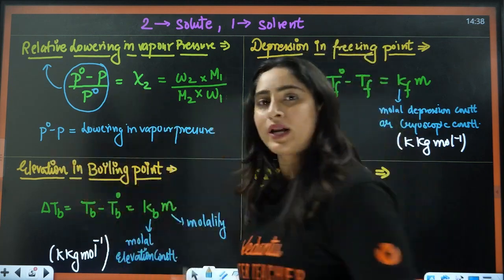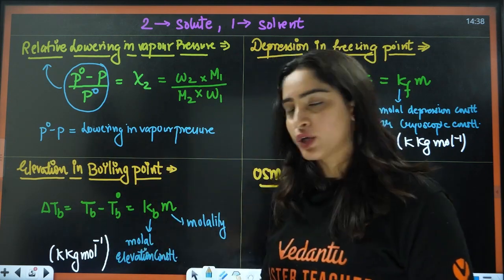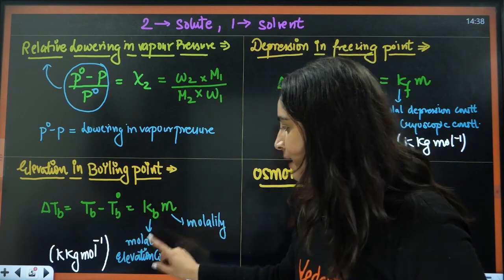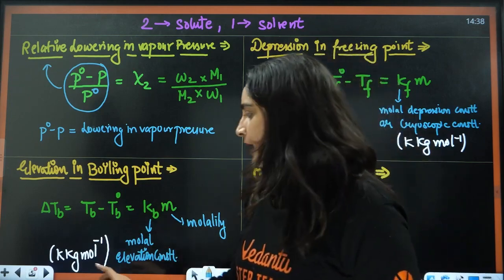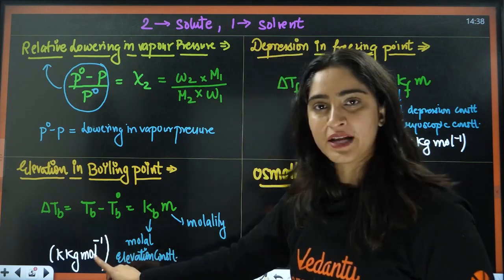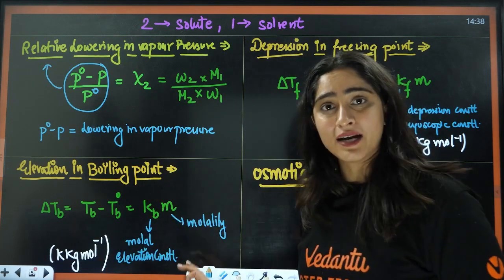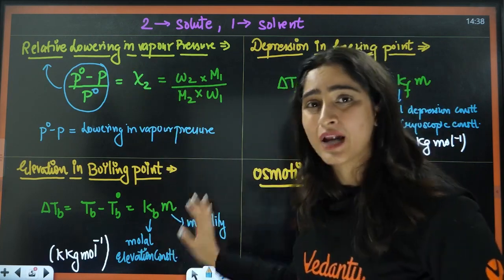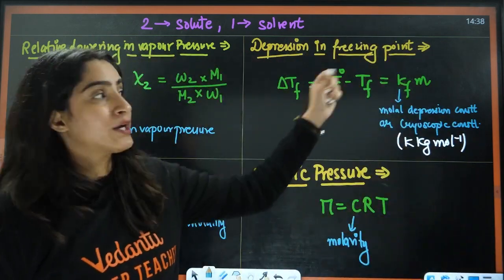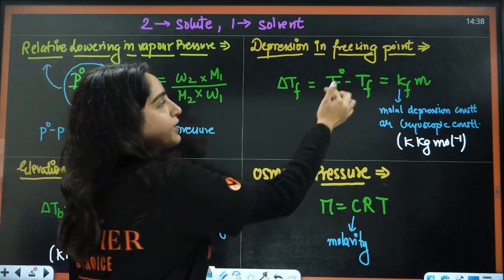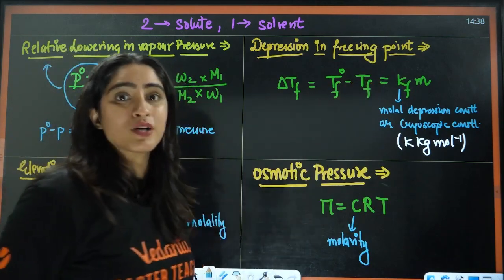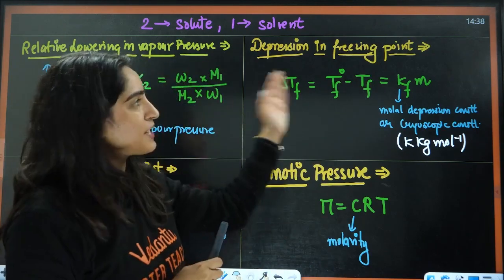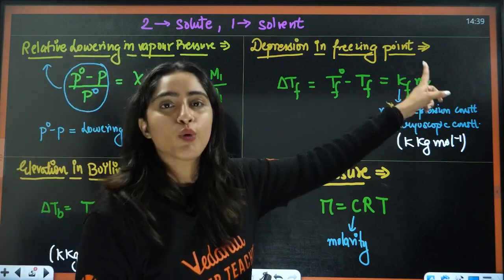Next, we have elevation in boiling point — the boiling point increases after adding solute. So delta T_b equals T_b minus T_b⁰, which equals K_b times m, where K_b is the molar elevation constant. The units for K_b are also mentioned and can be asked. Here m is the molality. Always remember: with relative lowering in vapor pressure, we use mole fraction; here we use molality. In depression of freezing point, the formula is similar — T_f⁰ minus T_f because the freezing point is lowering. That also equals K_f times m, which is molality.